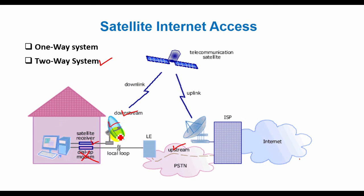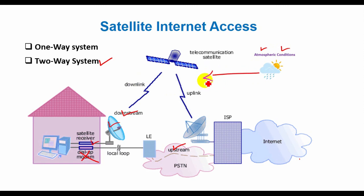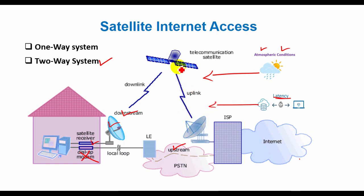The exact speeds you can expect with satellite internet depend on many factors. As with other wireless technologies, atmospheric conditions can significantly affect the performance of satellite internet access. One additional consideration for satellite internet access is propagation time — how long it takes the signal to travel back and forth from the satellite. In networking terms, this time is long and therefore is an important consideration for business applications.